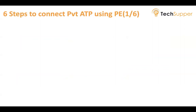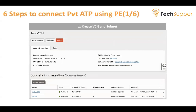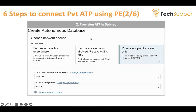Let's walk through the six steps to connect private ATP using the PE feature — the same steps apply for other resources as well. First, create a VCN and subnet: for example, a test VCN with CIDR range 10.0.0.0/16, and within it two subnets — one public and one private subnet with CIDR range 10.0.1.0/24. Second, set up your ATP in the private subnet using the feature called private endpoint access only, which is visible on the ATP page and allows ATP to be accessed from the private subnet only. Choose the same VCN and subnet in which you're provisioning your ATP.